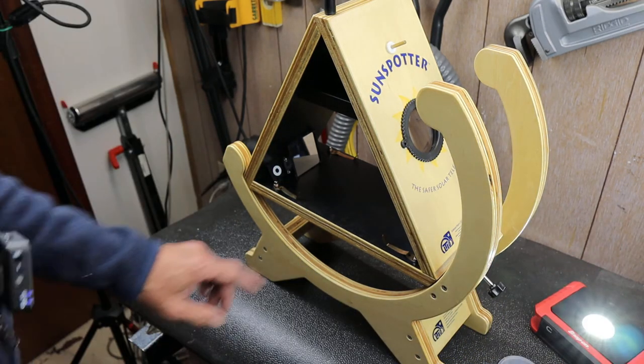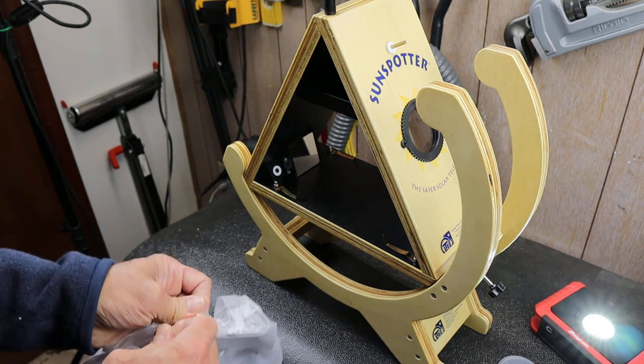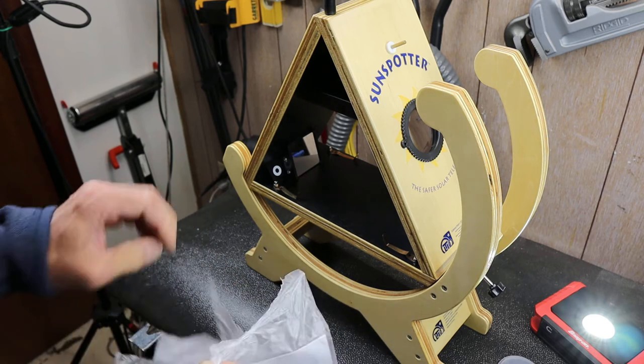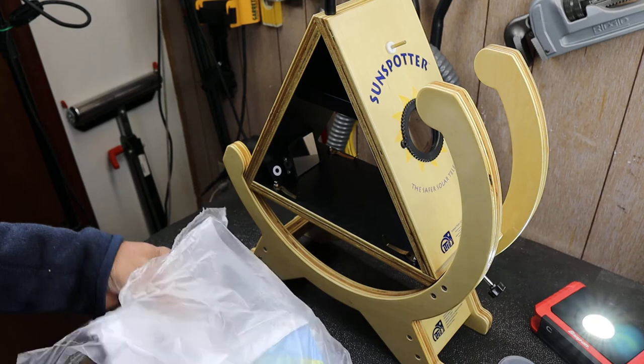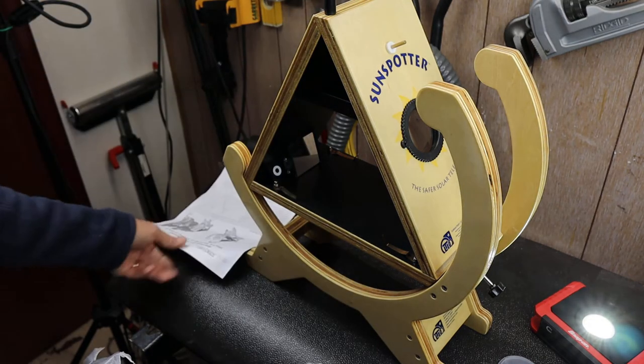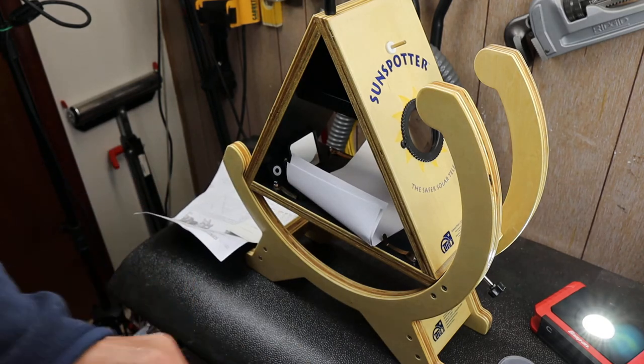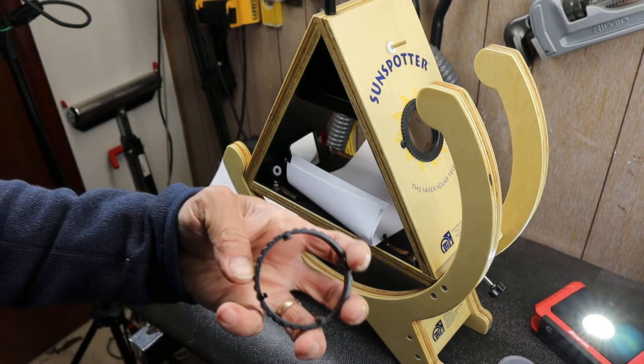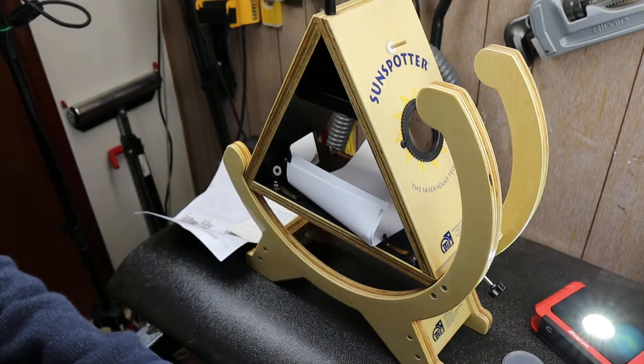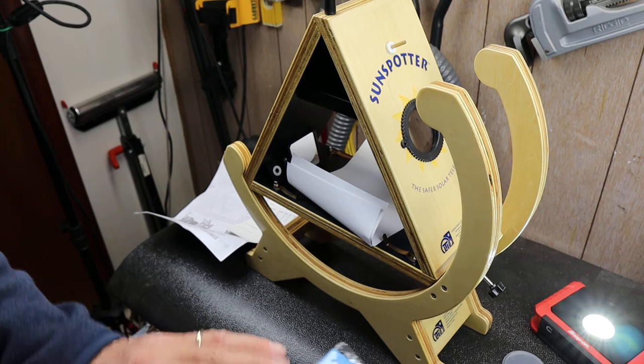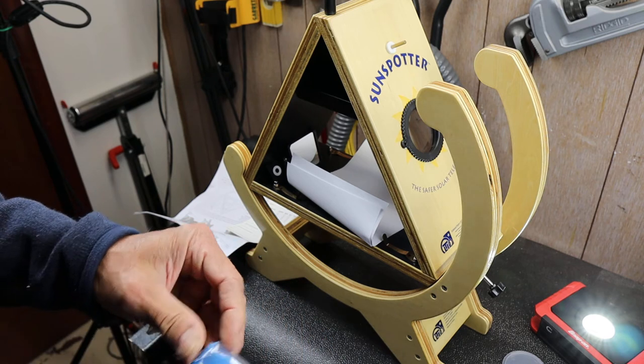So let's take a look at a couple of other things. Instructions, paper that goes in there, card. This is a lens tool basically. It fits on the inside of this lens if you need to take that lens out. And then this is a little nylon bag cover to protect it.